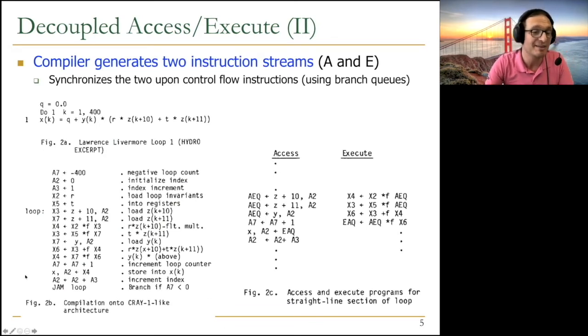Essentially, the basic idea is, instead of having a single instruction stream that looks like this, this is a very famous loop, Lowers Livermore loop. It does some scientific computation. You basically have two instruction streams, access and execute. Whenever you need to do memory access, you do it over here. Whenever you need to do operations, executions, and branches, you need to do it over here. Whenever you need to communicate a memory access result to the execute processor, you need to put it to access to execute queue. Communication happens through these queues.